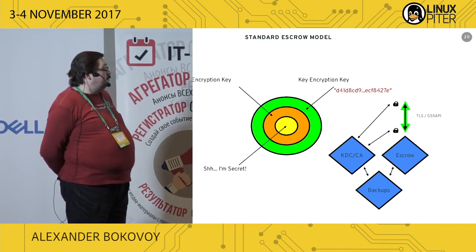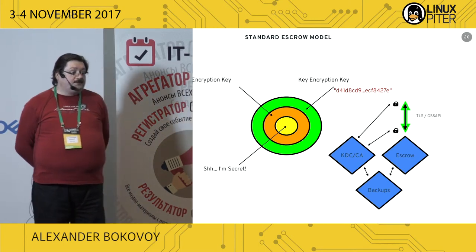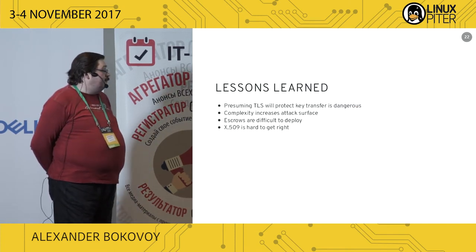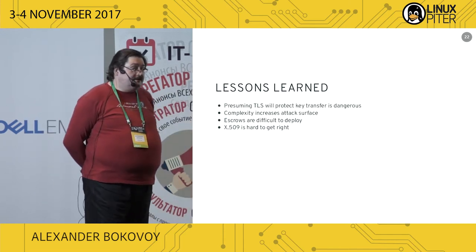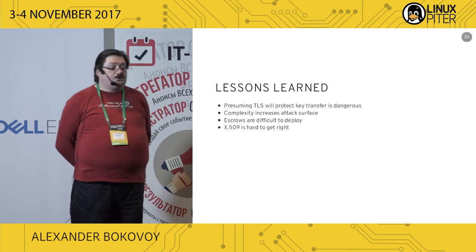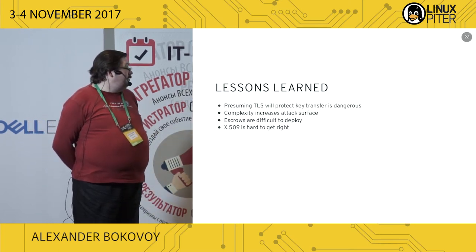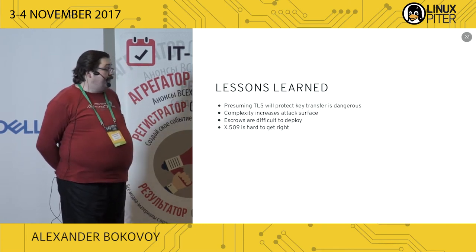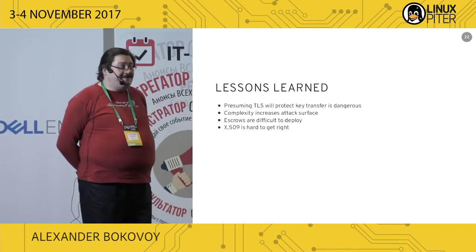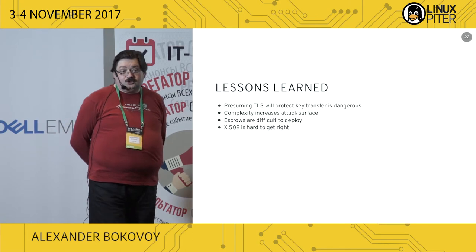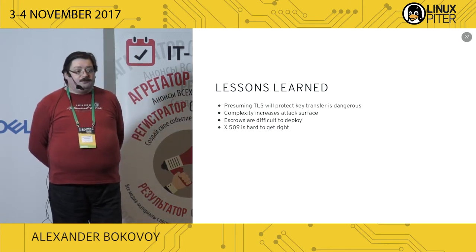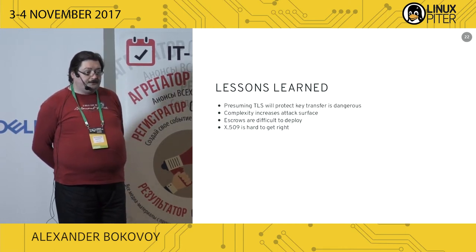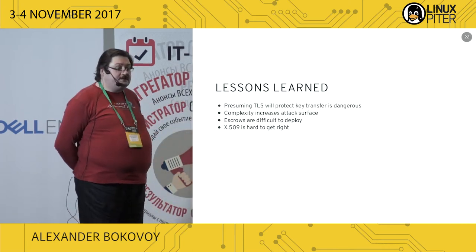Heartbleed proved that all this is unnecessary — if we have this done correctly, still one server generating an incorrect certificate during TLS connection setup may be broken from outside, and all this becomes useless. There's no absolute guarantee. The level of complication only makes the attack surface bigger. If we have three, four, or five points of data transfer, the attack surface grows that many times over. Those escrow mechanisms — the storage of those keys — are difficult to implement.